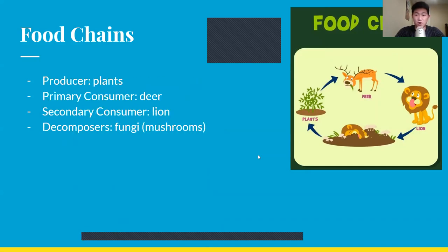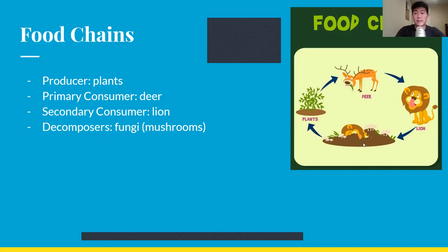The answers are: the producer is the plants, because they make their own energy through photosynthesis. The primary consumer is the deer, because they eat the producers. The secondary consumer is the lion, because it eats the primary consumer. The decomposers are the fungi in the picture — these mushrooms — that decompose the dead body of the lion. These decomposers break down the dead body and turn it into nutrients stored in the soil, which in turn help plants grow and keep the cycle going.